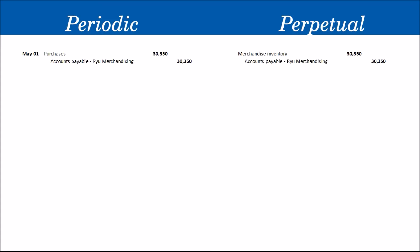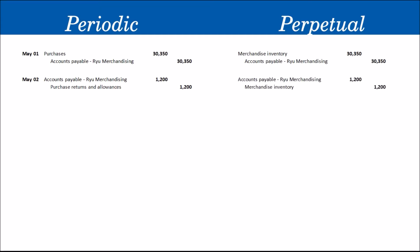For May 2, we returned 1,200 pesos worth of defective merchandise to Reu Merchandising. Under the periodic system, we debit Accounts Payable — Reu Merchandising for 1,200 and credit Purchase Returns and Allowances for 1,200. Under the perpetual system, since inventory records are always updated, we debit Accounts Payable — Reu Merchandising for 1,200 and credit Merchandise Inventory for 1,200.